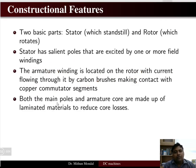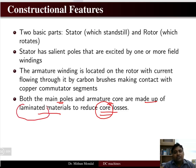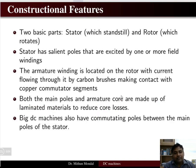Both the main poles and the armature core are made up of laminated materials to reduce the core losses. Core loss can be hysteresis loss or eddy current loss, and it has to be reduced with the help of lamination. Hence the main pole and the armature core are laminated.